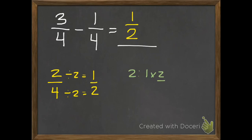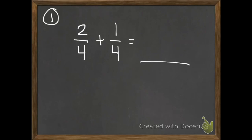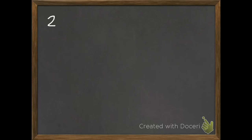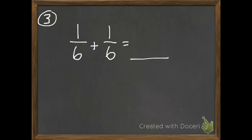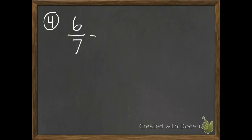Here are your four problems. Remember to be very careful to see if you are adding or subtracting, because doing the opposite will make a big difference in whether you get the answer right. Number 1: 2 fourths plus 1 fourth — your answer needs to be in simplest form. Number 2: 6 eighths subtract 2 eighths — simplest form. Number 3: 1 sixth plus 1 sixth — simplest form. And last, 6 sevenths subtract 4 sevenths — see if you can put it in simplest form or if it already is. Bring these to class tomorrow.